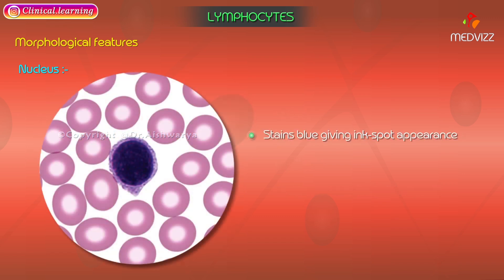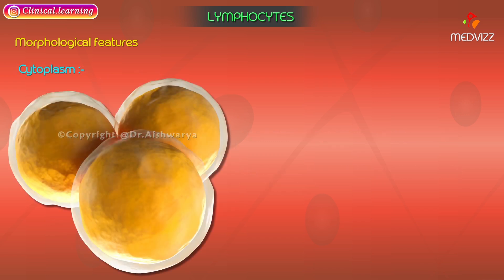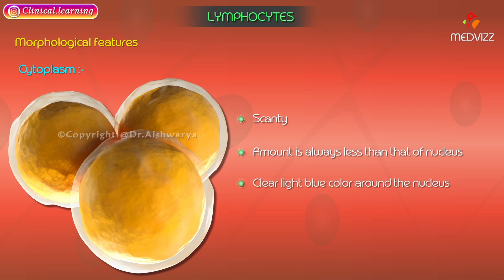The nuclear chromatin is clumped as well as shapeless. The cytoplasm is scanty because the majority of the cell is occupied by the nucleus, and its amount is always less than that of the nucleus. The cytoplasm is seen as a clear light blue color around the nucleus.